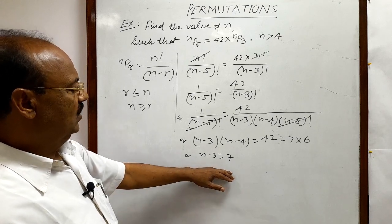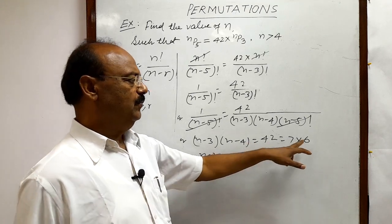N minus 3 is equal to 7. And N minus 4 is equal to 6.